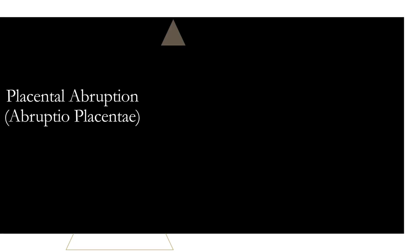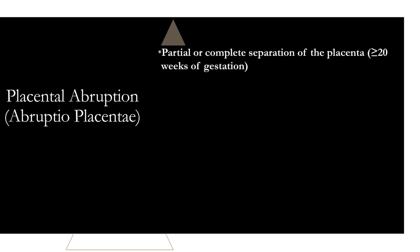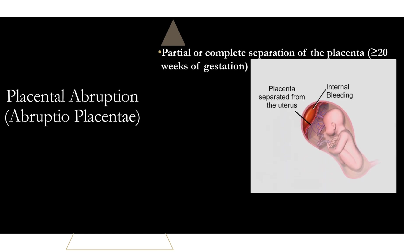We're going to start with placental abruption, also known as abruptio placentae. This is a partial or complete separation of the placenta at or after 20 weeks of gestation — a premature separation of the placenta from the uterus. If this happens prior to 20 weeks, it's usually considered part of a spontaneous abortion. It also has to be prior to fetal expulsion. After the fetus is delivered, the placenta naturally separates, so timing is key: after 20 weeks and prior to delivery.